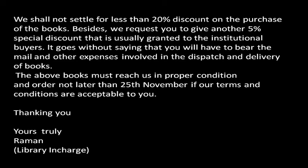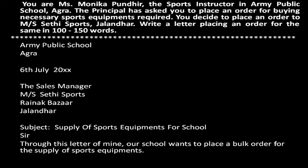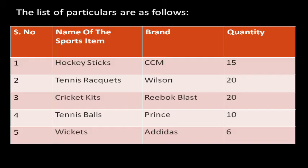The next letter — you are the sports instructor and on the request of the principal, you are writing to the Sales Manager, Messrs City Sports, Jalandhar, asking for sports equipment for the school. Same format: sender's address, date, receiver's address, subject. Opening sentence: 'Through this letter, our school wants to place a bulk order for the supply of sports equipment.' Then the table — same structure: four columns: serial number, name of sports item, brand, quantity. You can see how I have given the brands.